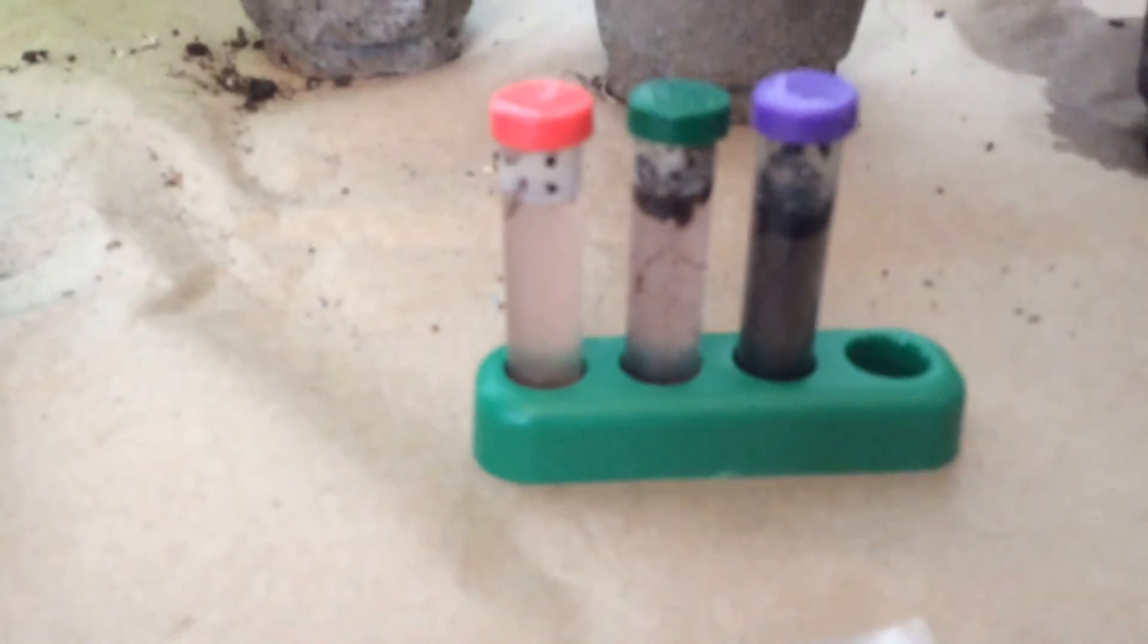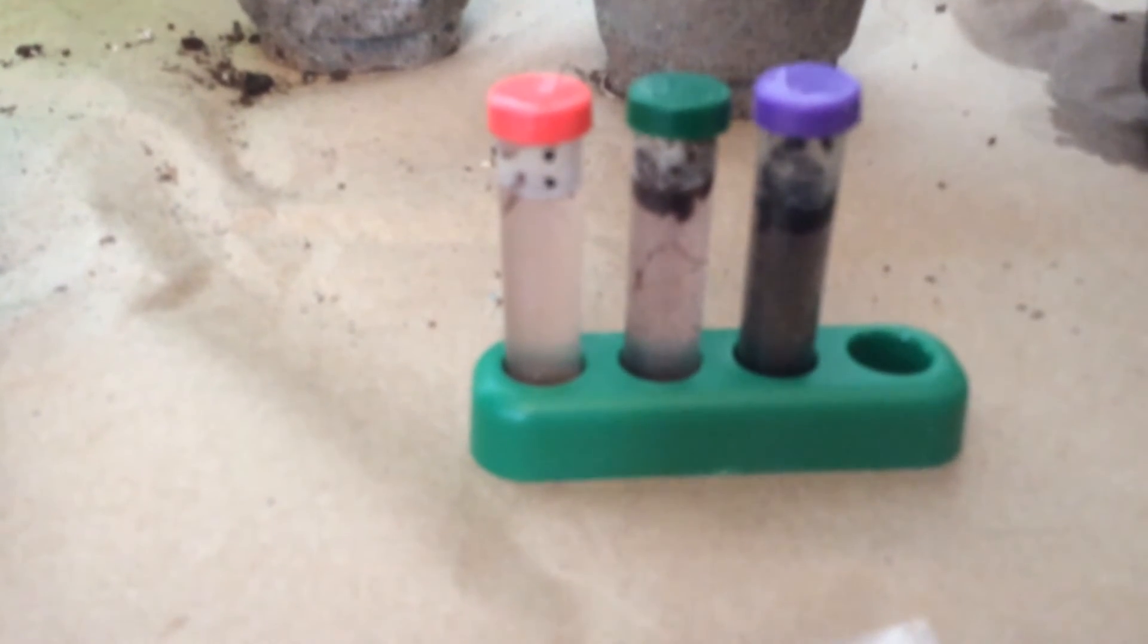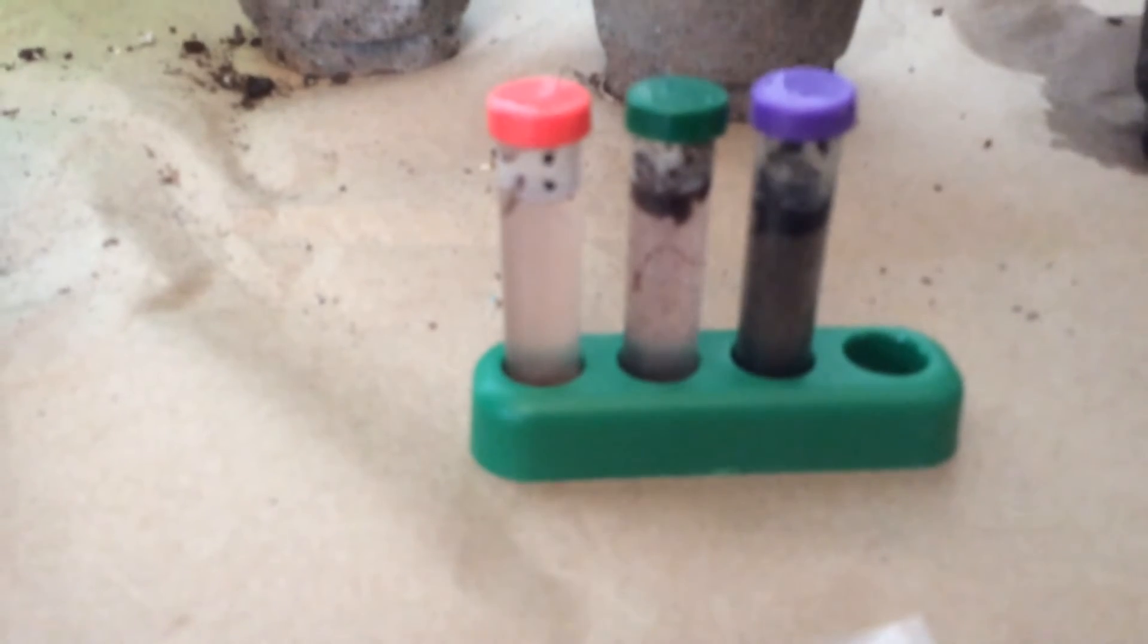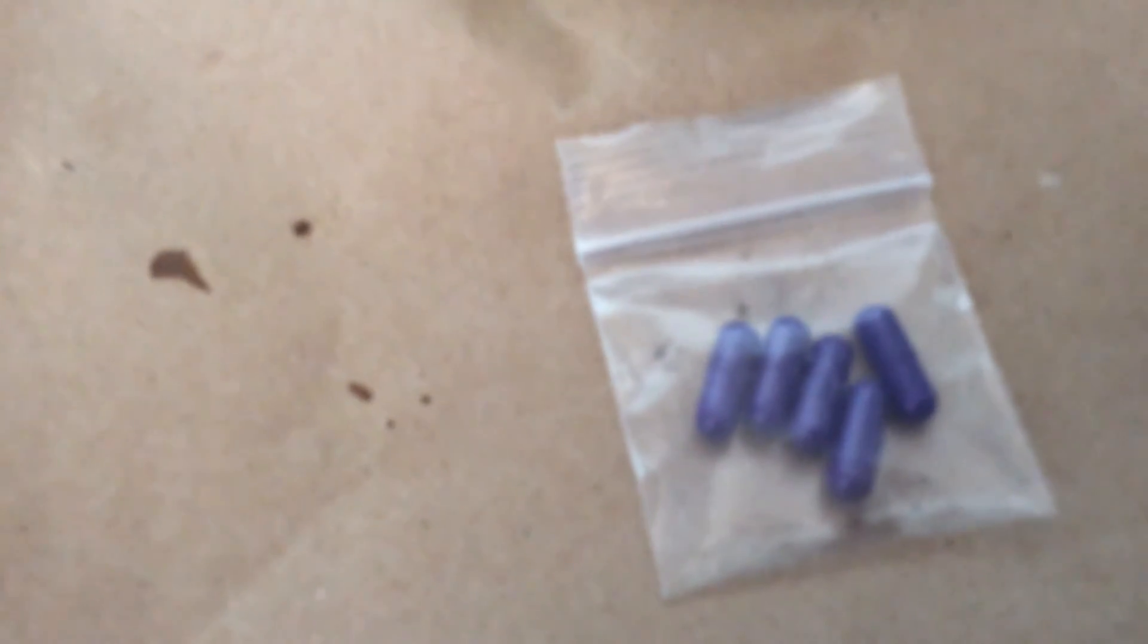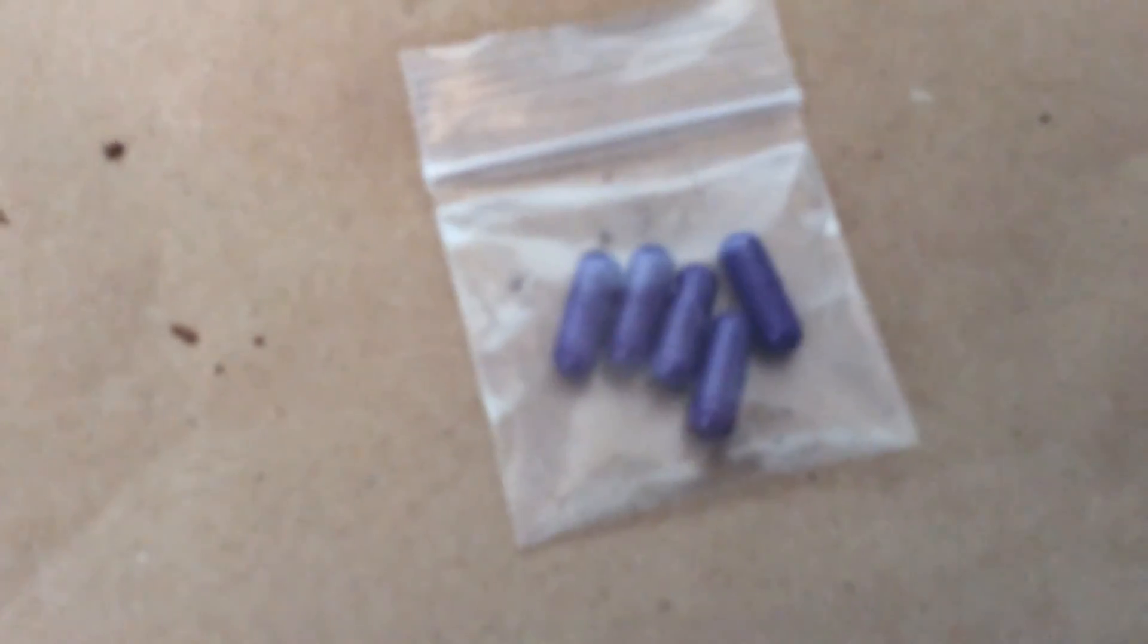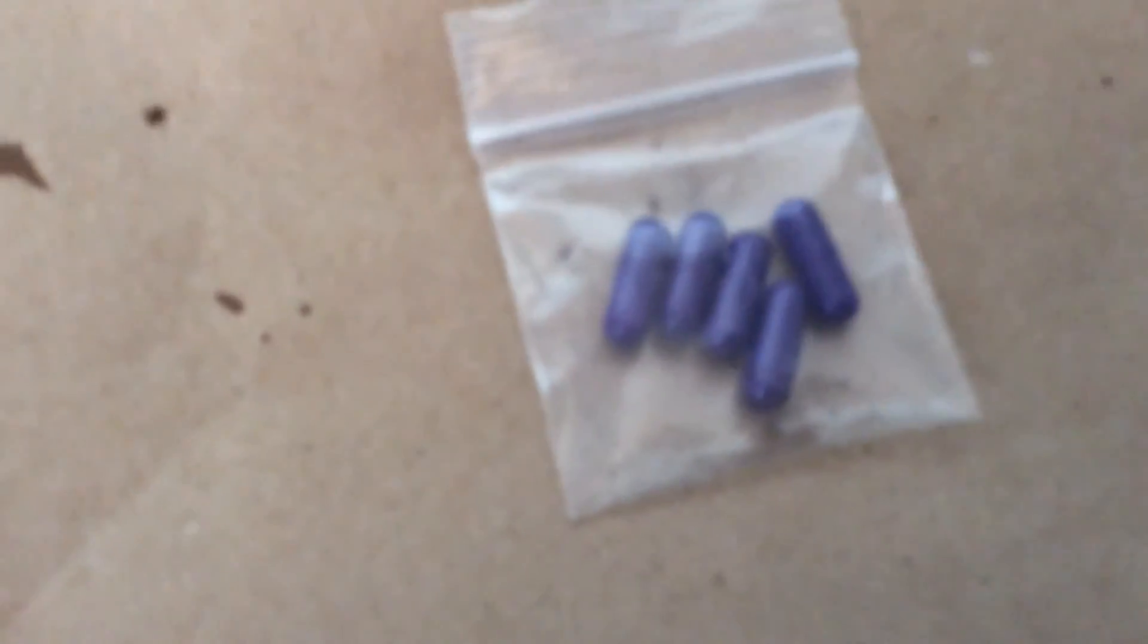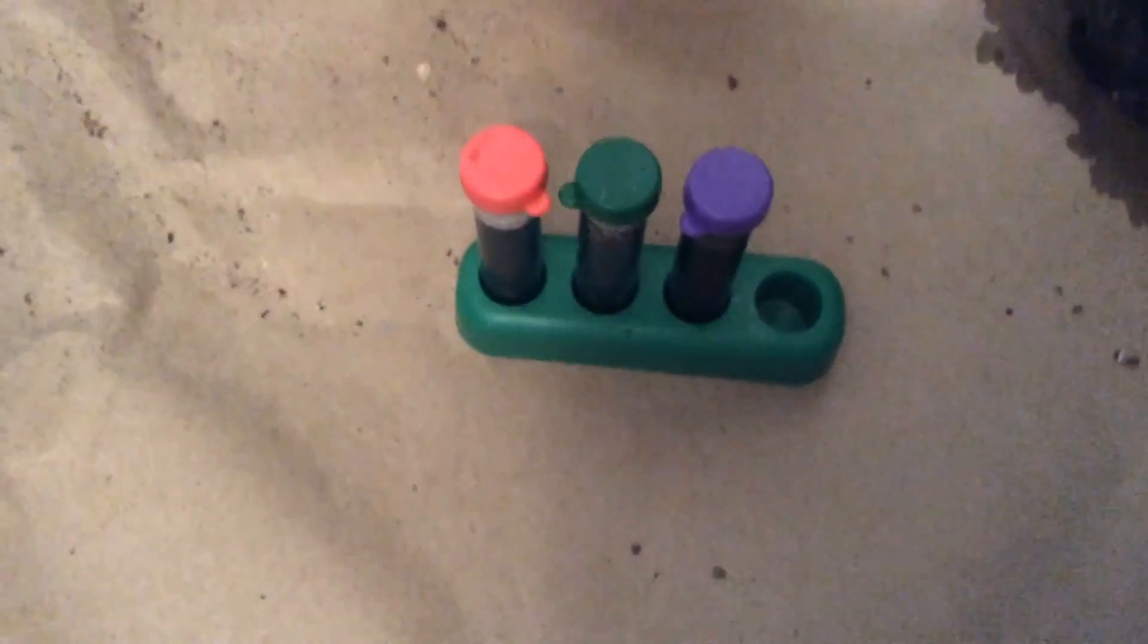I would then test it for the level of nitrogen present, and same with all the other ones. The darker the color, the more nitrogen is present, and the purple one, which is the plant ash, has more nitrogen present than either the red one, which is the soil, or the green one, which is the fertilizer. Same procedure as all the other ones, except I add these purple capsules.